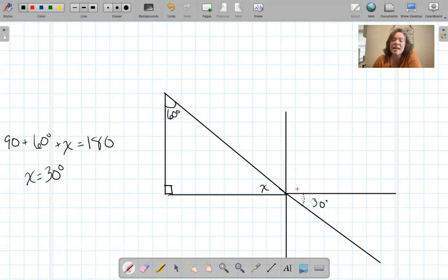Now, let's say this is 90. And this is Y. Well, this is a straight line. And we know straight lines are 180. So if this is 90 and this is 30, what's this? 90 plus 30 plus Y equals 180.